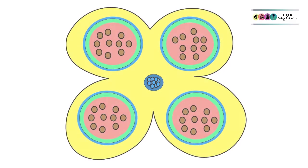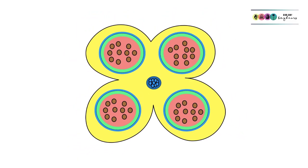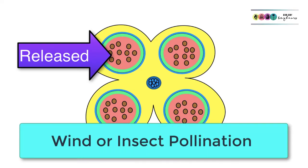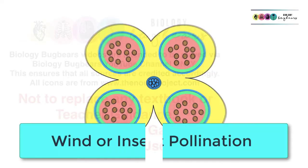So when those pollen grains have been formed, it's time for their release. So the anther splits, releasing the pollen grains and they get carried either by the wind or by an insect to the anther of a flower.